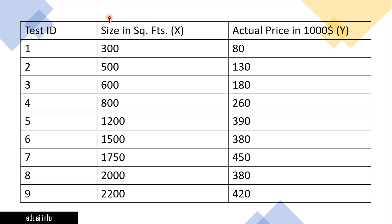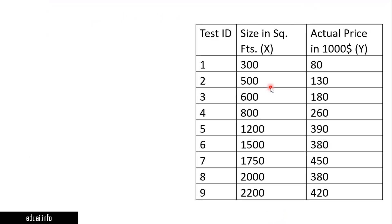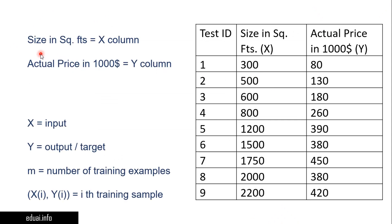Now let's transfer these terms into math and see what we get. For this given table, our assumptions are: the size of the house in square feet is the x column, the actual prices in thousand dollars is the y column. x is our input and y is our output — the target. m is the total number of training samples including x and y. If there are 9 rows, we have 18 training samples. x(i) is the ith training sample, so x(1) is 300 and x(4) is 800.